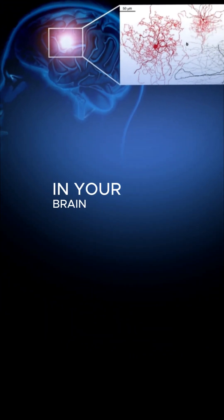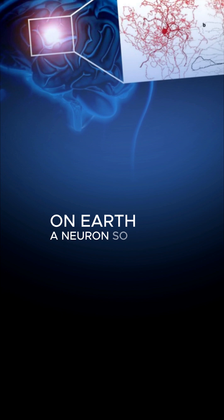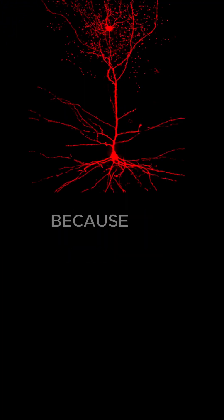There is a cell in your brain that exists in no other creature on Earth. A neuron so unusual, scientists nicknamed it the rosehip because it looks more like a tiny plant than a brain cell.